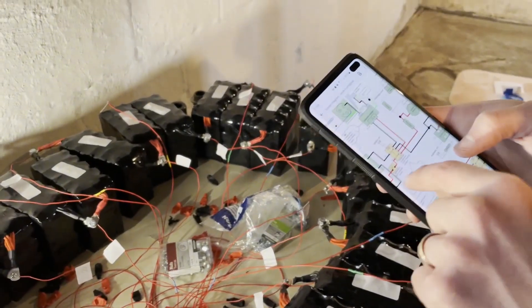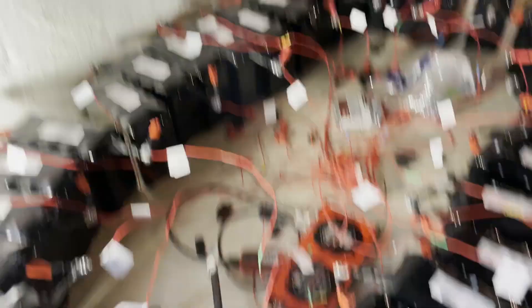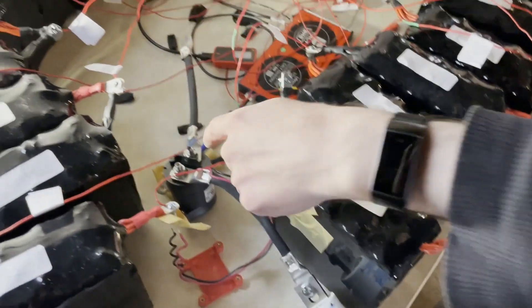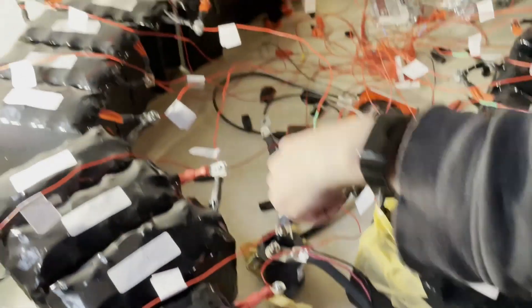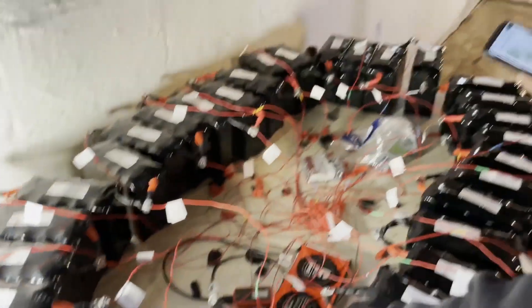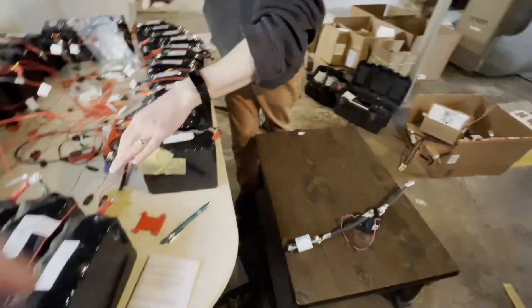The BMS negative is going to go to the total negative of the battery bank. Total positive off the battery bank is going to go through this massive fuse into our controller. And then our pre-charge circuit is going to come off of here, bypass this contactor, and then come back in on this connector here.